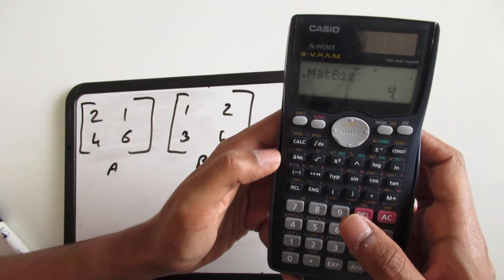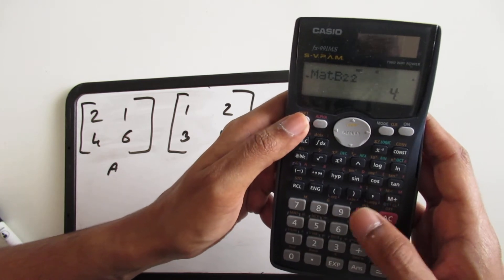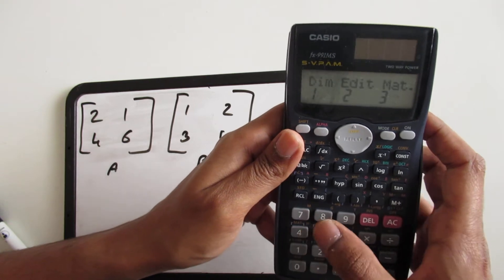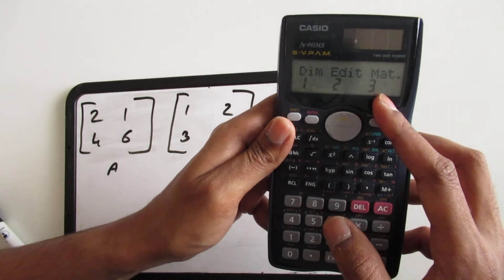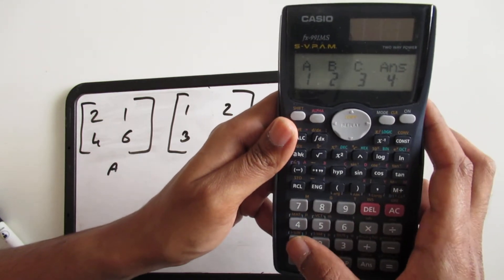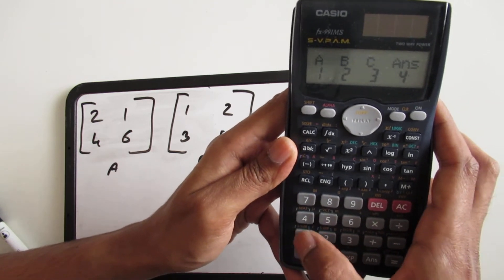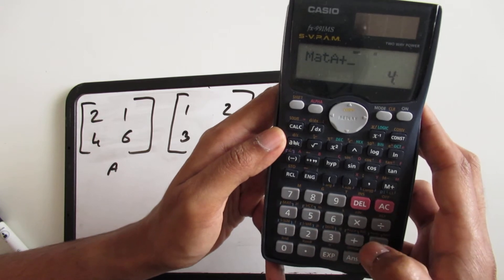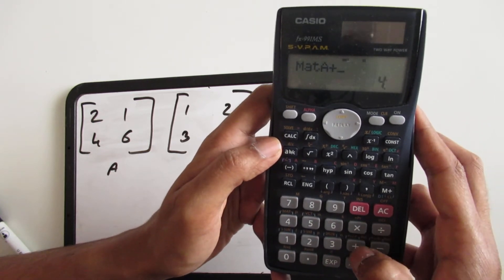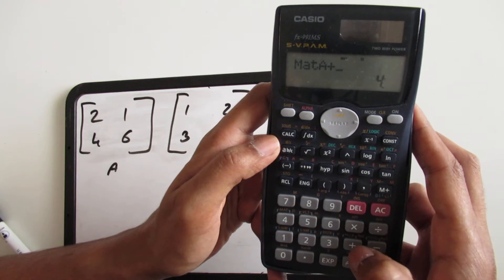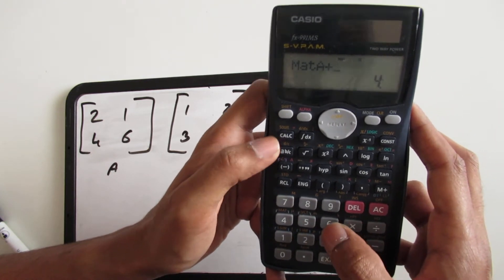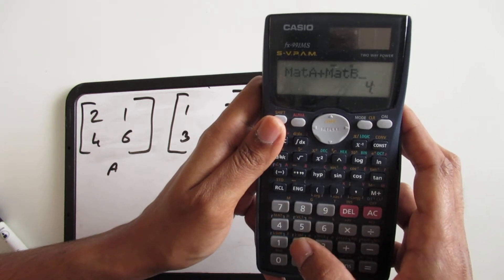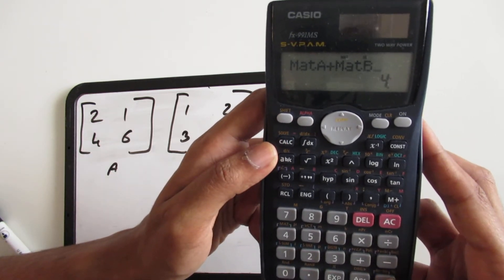Now we can do operations with it. The way you do operations is if you want to add you go to shift matrix and this time you select the matrix, so you select 3. Now I want to select matrix A so I press 1. It shows me matrix A. Now I want to add the two matrices so I press the plus button right here and then do the same thing. This time I'm going to add it so you get matrix A plus matrix B.